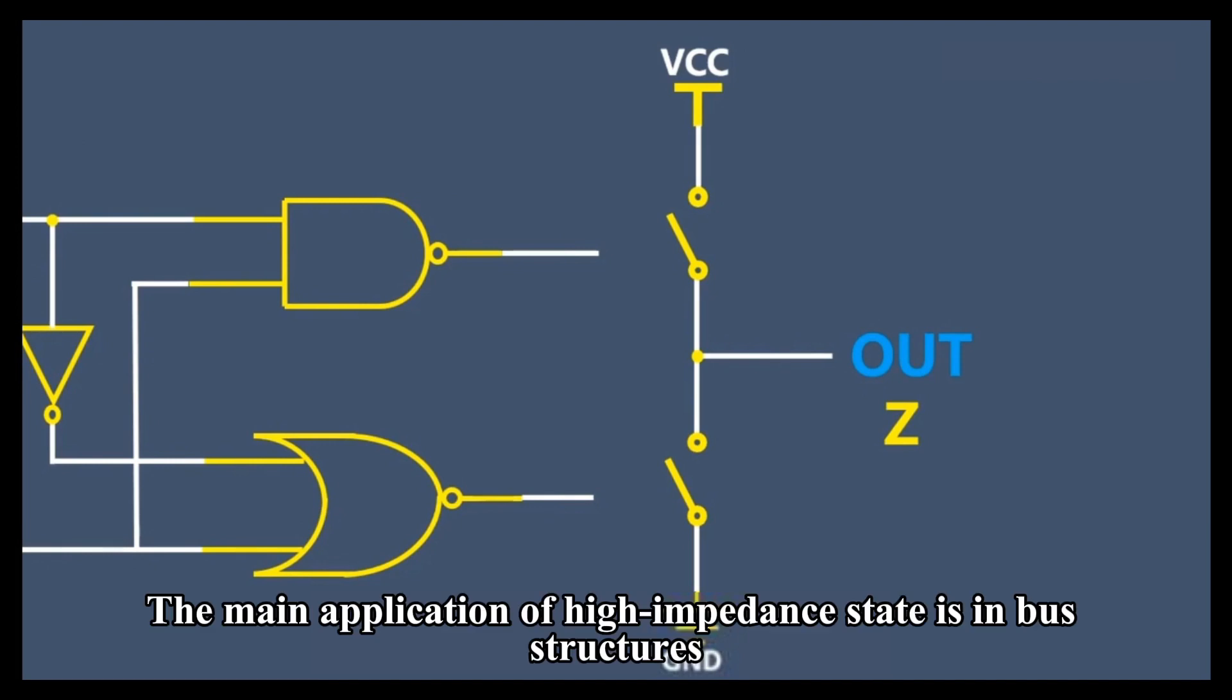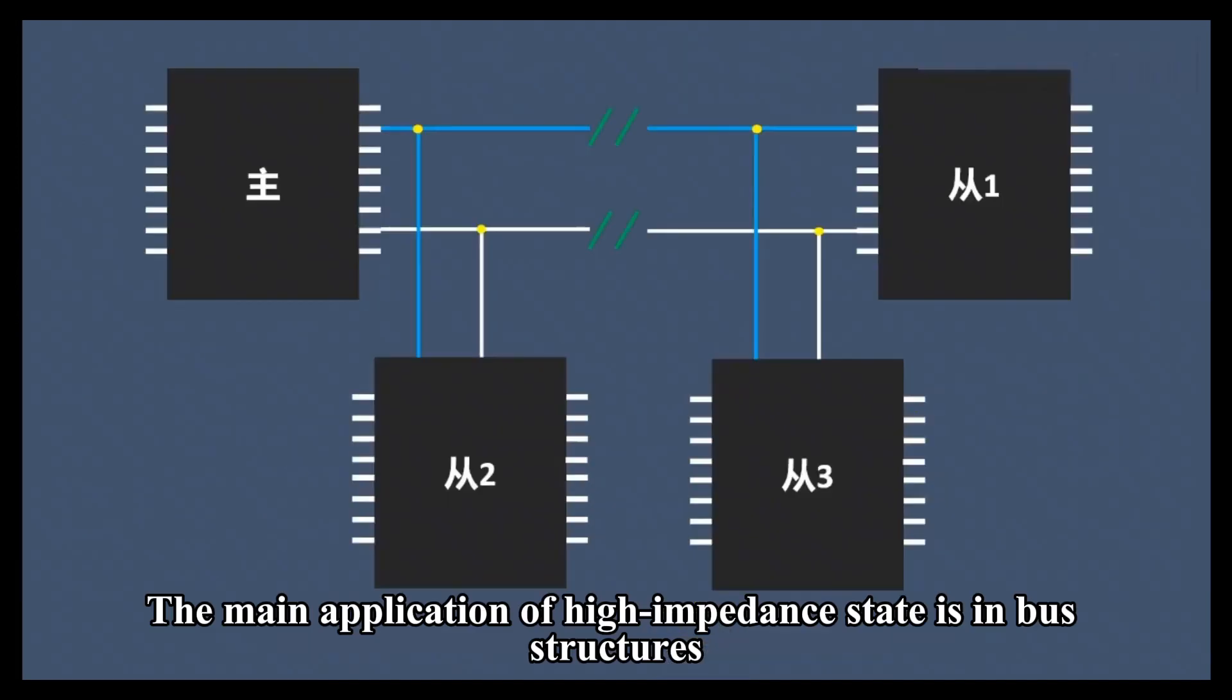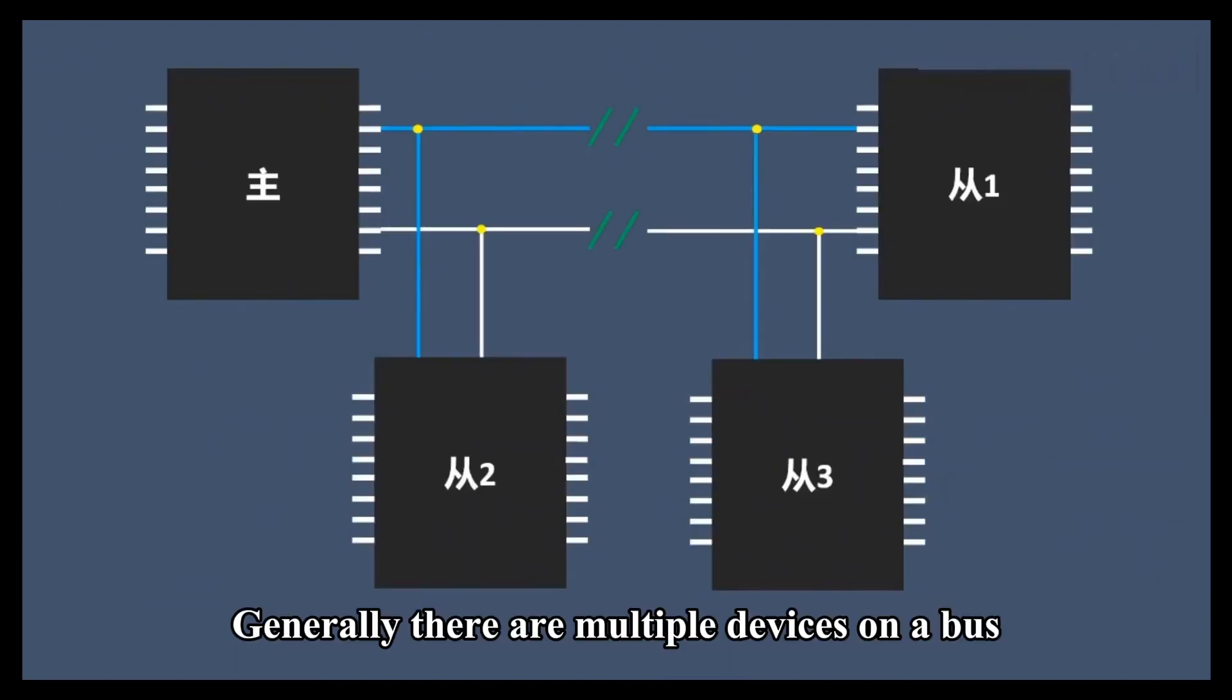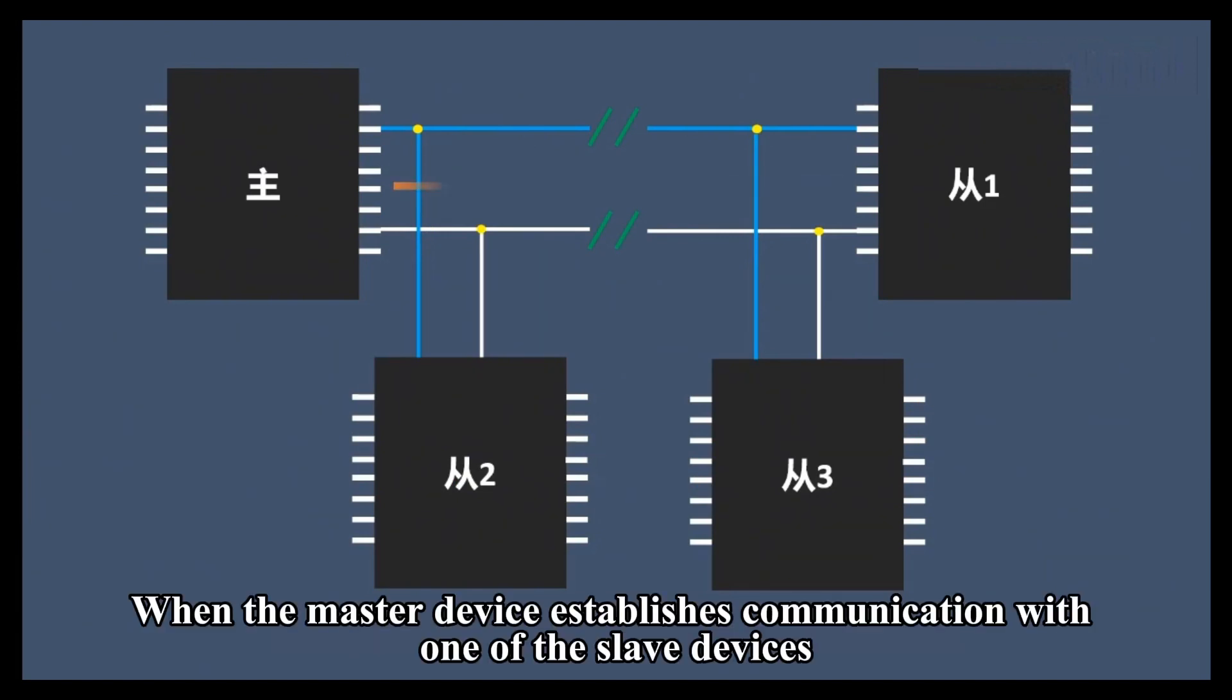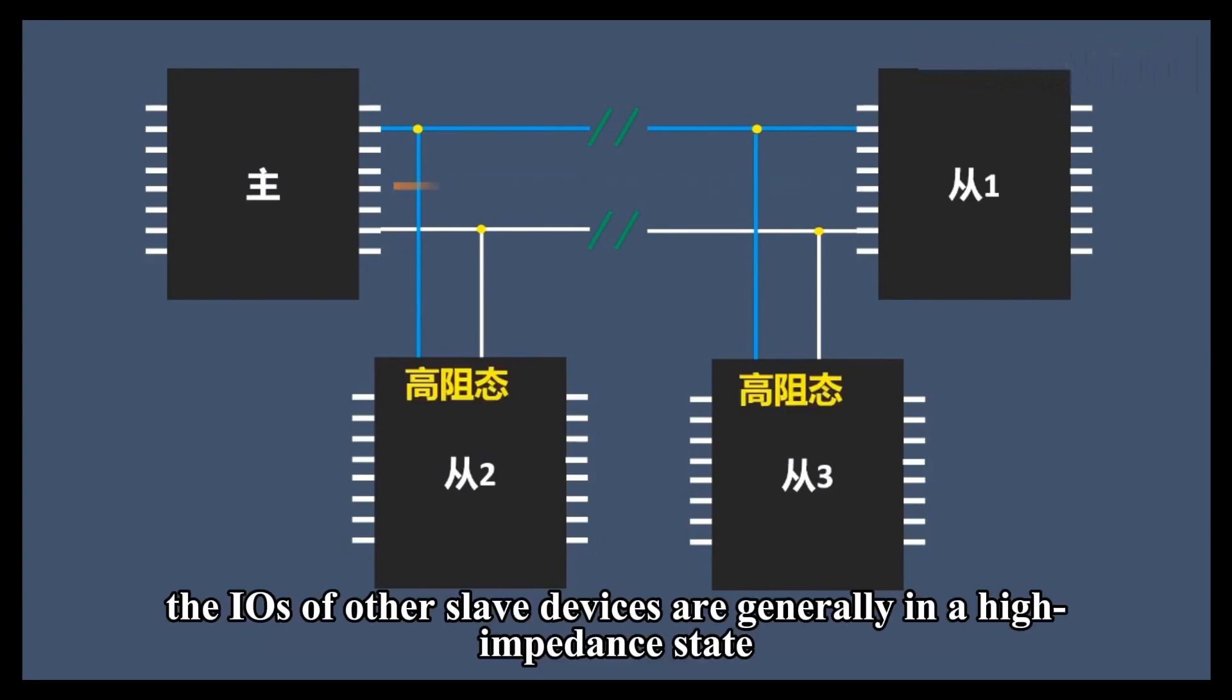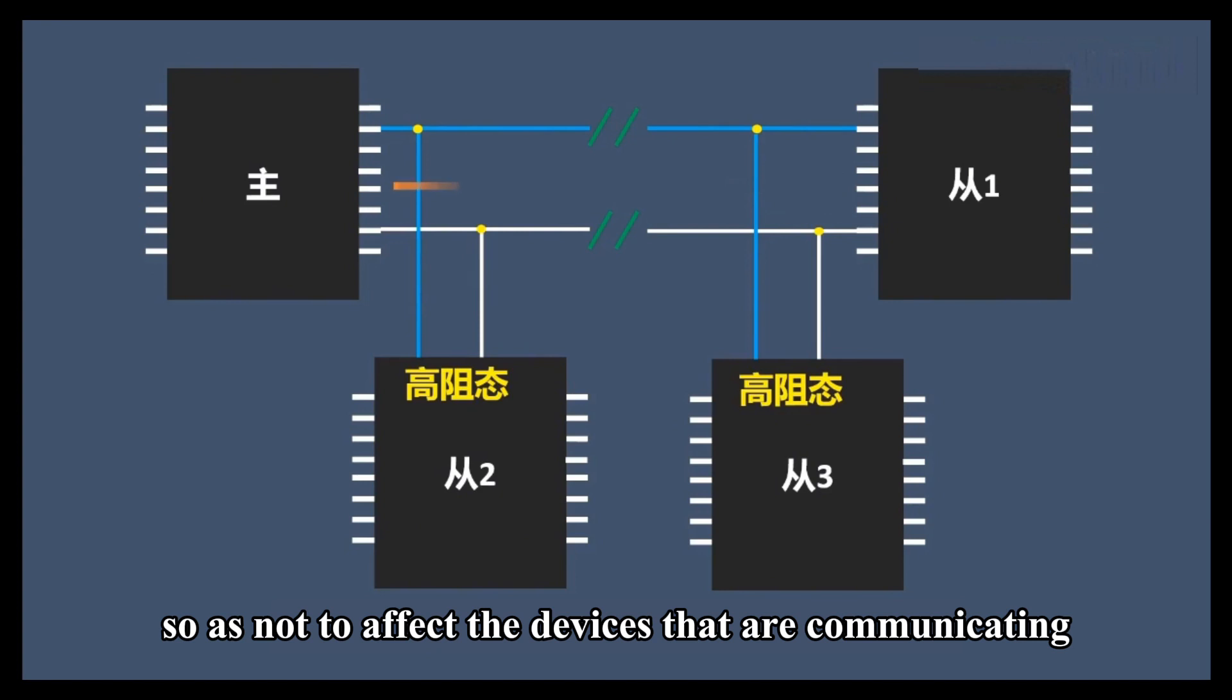The main application of high-impedance state is in bus structures. Generally, there are multiple devices on a bus. When the master device establishes communication with one of the slave devices, the IOs of other slave devices are generally in a high-impedance state so as not to affect the devices that are communicating.